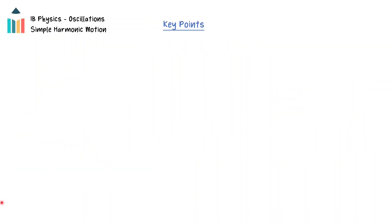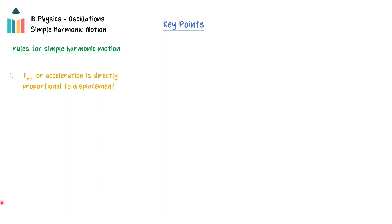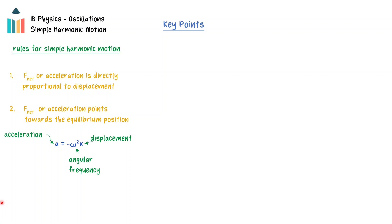In summary, simple harmonic motion is defined by two conditions. The net force or acceleration acting on a mass is directly proportional to the displacement from equilibrium, and the direction of the net force or acceleration points towards the equilibrium position. These rules are shown in the defining equation of simple harmonic motion: the acceleration is equal to the angular frequency squared times the displacement. The acceleration is directly proportional to the displacement because omega squared is a constant, and the acceleration points towards the equilibrium position, which is shown through the negative sign in the equation.